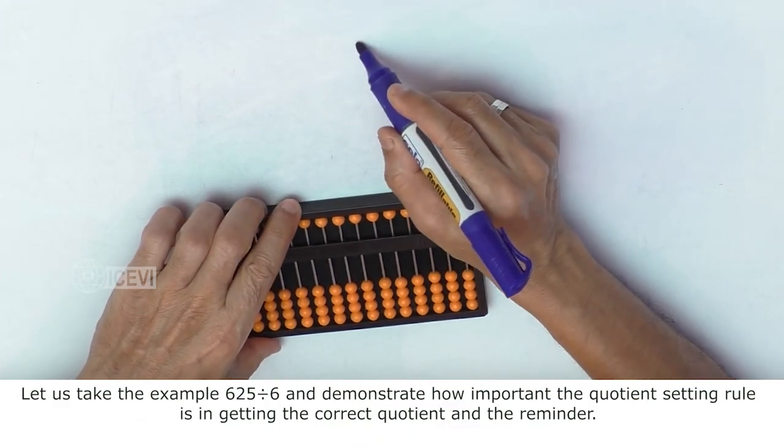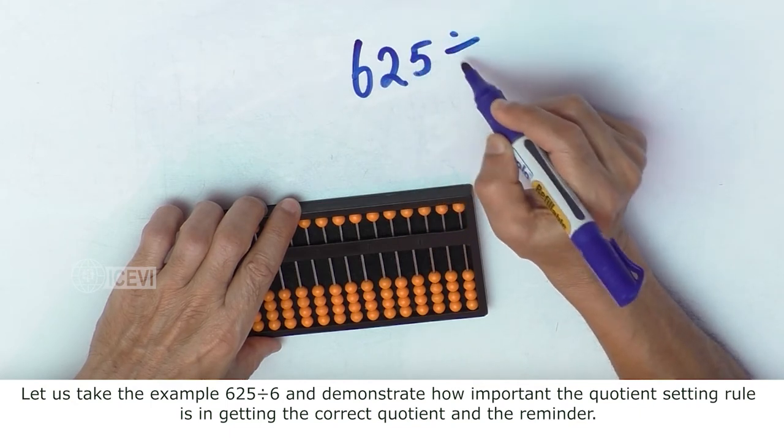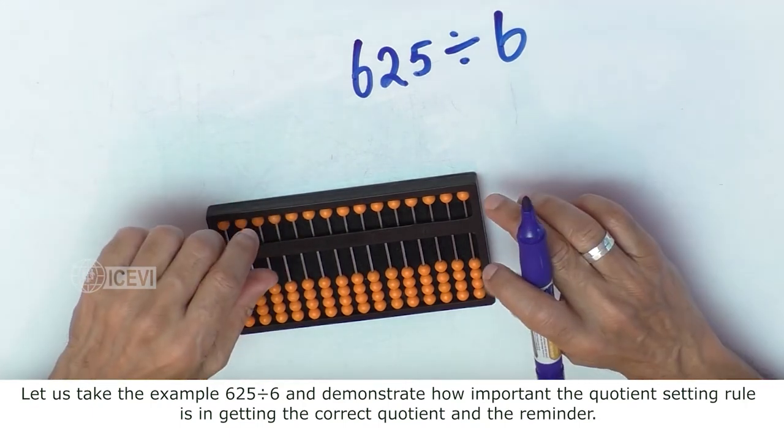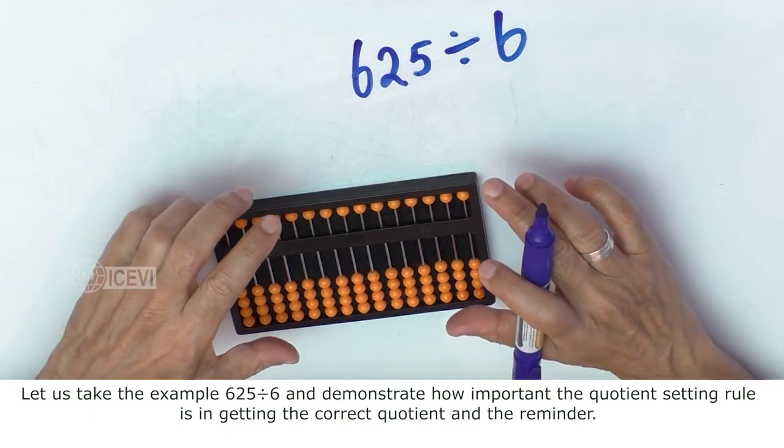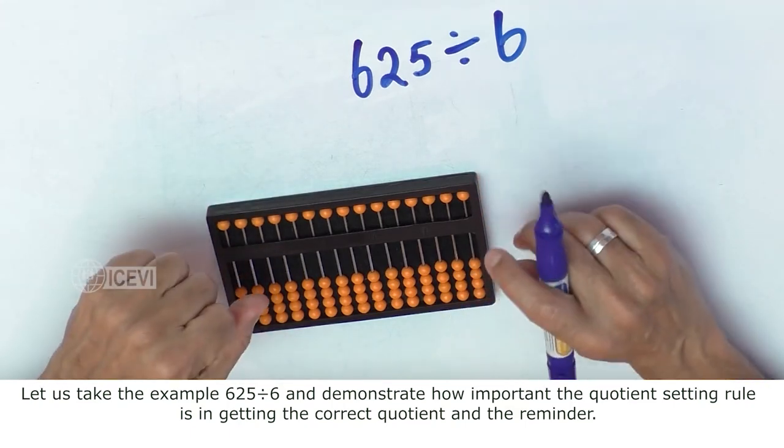Let us take the example 625 divided by 6 and demonstrate how important the quotient setting rule is in getting the correct quotient and the remainder.